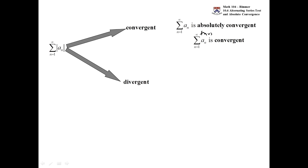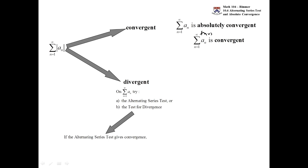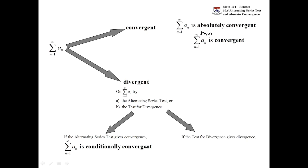When that series of absolute values diverges, the story isn't over. What we need to do is look at the original series without the absolute values, throw the negatives back on, and consider some other test. If on the original series you try the alternating series test and get convergence, then that type is called conditionally convergent. If you try the test for divergence and get divergence, there's no different degree of divergence — divergence is just divergence.